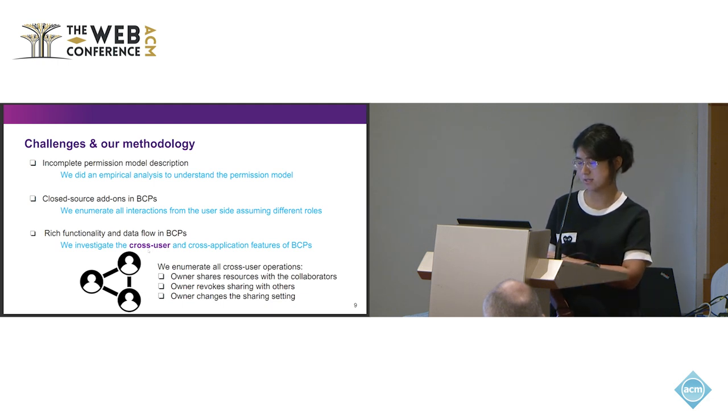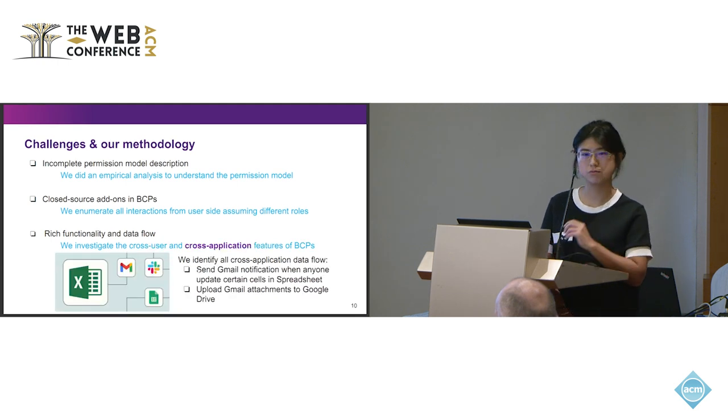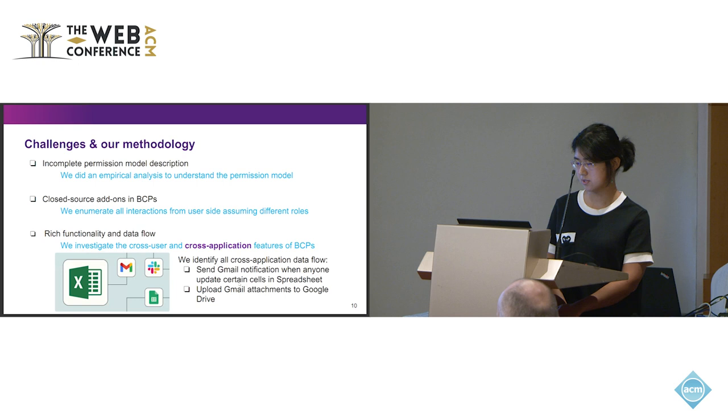For the third challenge is that actually, we know that Google Workspace provide a very rich functionality and complex data flows. So for the course, we investigate the course user, like whether owner can share his file, can revoke the sharing setting, and can change the current sharing settings. Also for the cross application flows, here is one example. So the data flow can actually flow from the spreadsheet to Gmail using this IDAM, send the email Gmail notification whenever anyone update certain cells in the spreadsheet. And in this cross application, data flow does the BCP can still enforce the security.